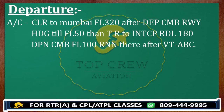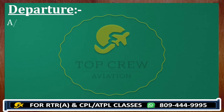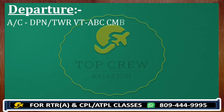Once we get the clearance from ATC, we need to comply with that. Because we have read back all the instructions, now we have to comply. You call: Delhi Tower, Victor Tango Foxtrot Bravo Charlie — climbing runway heading till flight level 50.